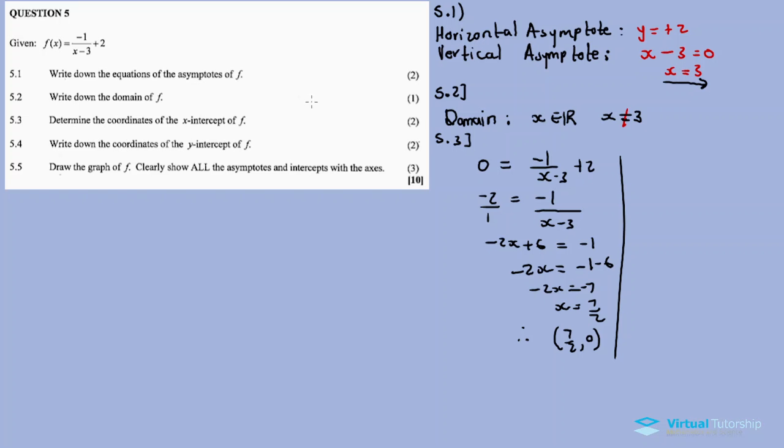5.4: write down the coordinates of the y-intercept. For the y-intercept, we let x equal zero. Y equals negative 1 over (0 minus 3) plus 2.